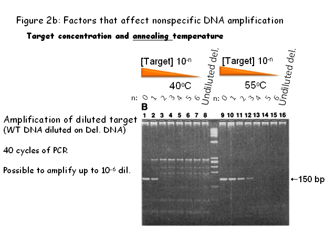Increasing the annealing temperature from 40 degrees to 55 degrees Celsius improved the specificity, as demonstrated in figure 2B. The DNA from a cell line containing the target was diluted in DNA from the cell line with the deletion of the target. After 40 cycles of PCR at 55 degrees, the authors demonstrate that it is possible to amplify DNA fragments even when the target is diluted to 10⁻⁴ using gel electrophoresis, or 10⁻⁶ using Southern Blot. Annealing at 40 degrees reduced the threshold to 10⁻² and 10⁻⁴ using gel electrophoresis and Southern Blot, respectively. Only gel electrophoresis is shown in this picture.